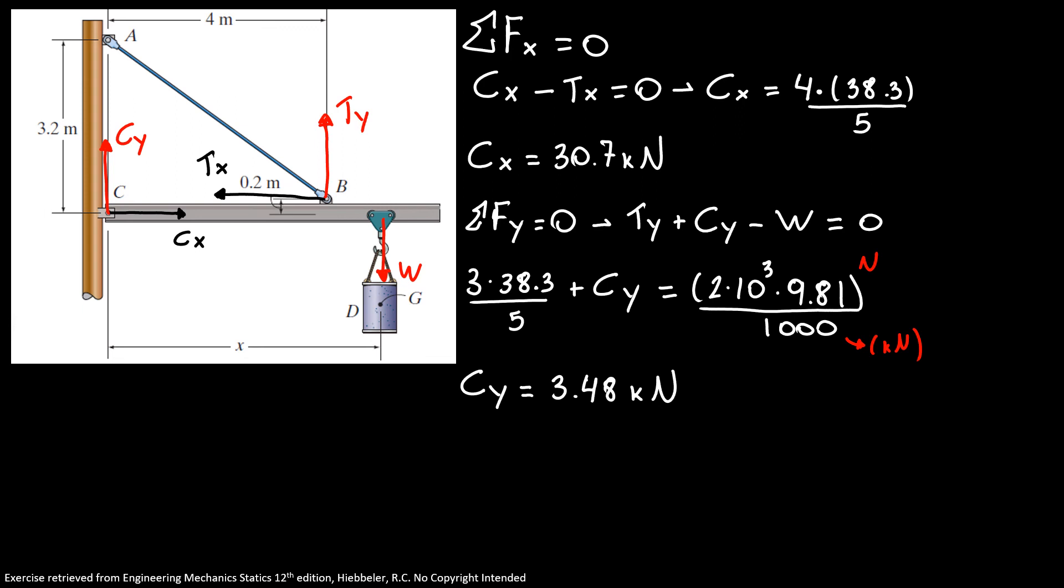Our CX is positive, which means CX is pointing to the right, and our CY is positive as well, so is pointing up. These are our answers: the horizontal component CX, vertical component CY, and the tension we found earlier, 38.3 kilonewtons, is the force developed on the rod AB.